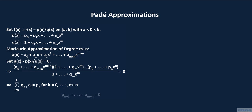We also have p sub n plus 1 all the way up to p sub m plus n all equal to 0, since the degree of p is n. The same is true for the coefficients q sub m plus 1 all the way up to q sub m plus n, since the degree of q is m.